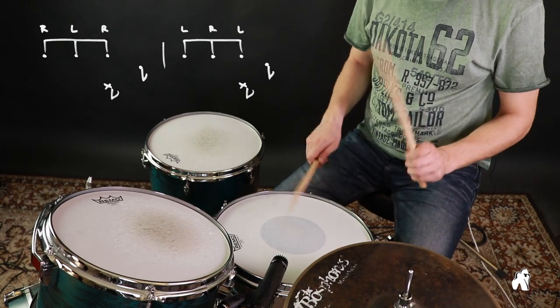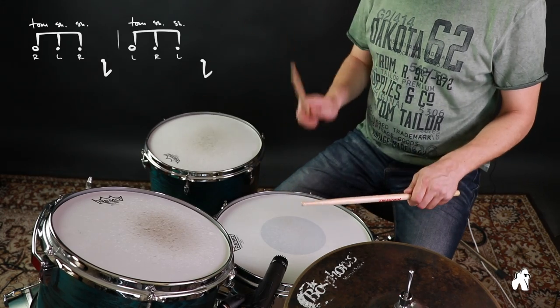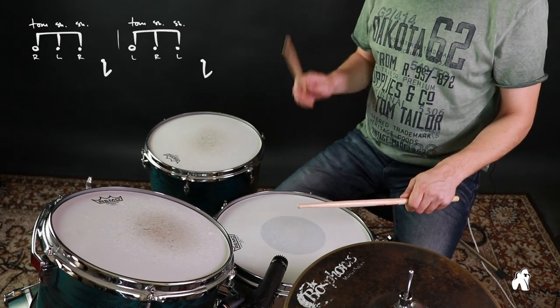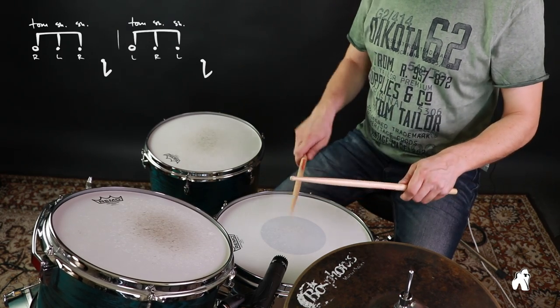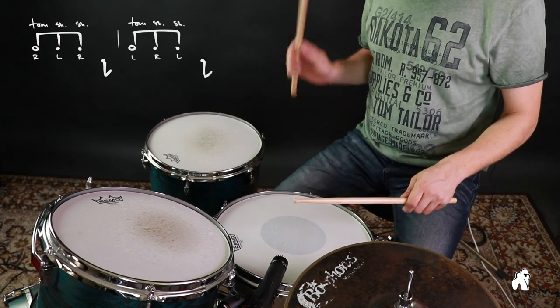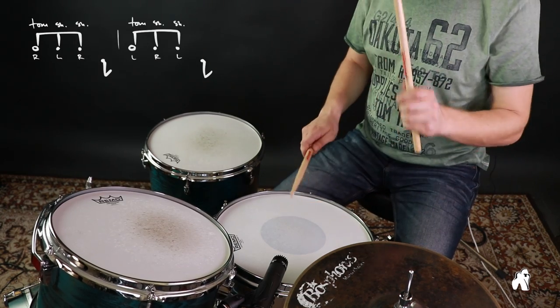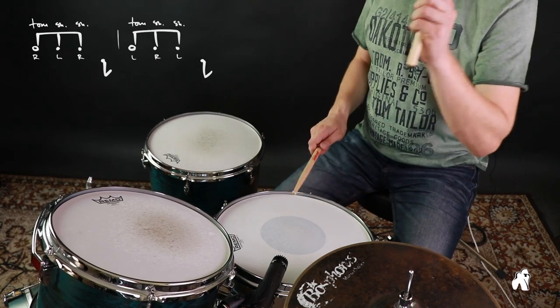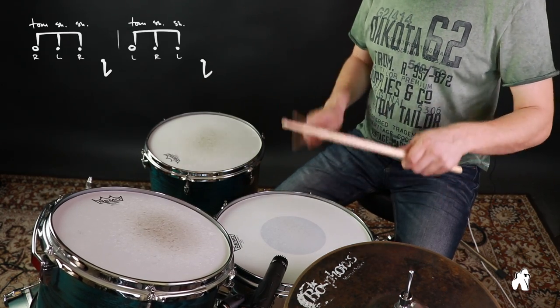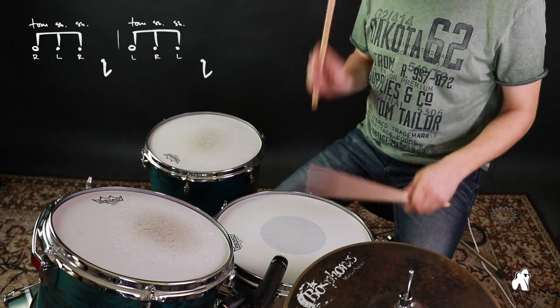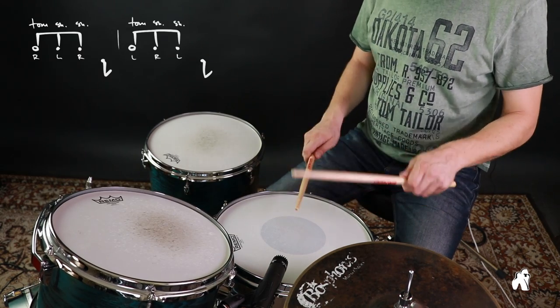Now that we've created the overall structure, it's time to make some tonal variations by adding toms into the mix. The first thing we will try is to play a tom on position one, while keeping the snare on positions two and three. Due to the symmetrical nature of the pattern, we would have to alternate with which hand we hit a tom.